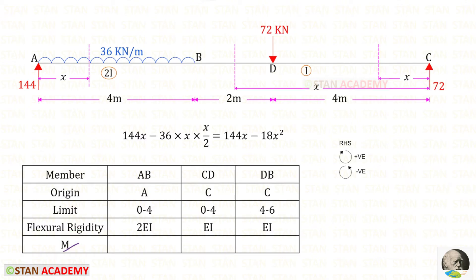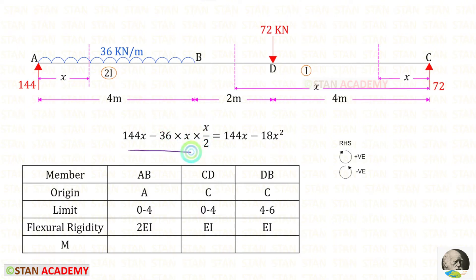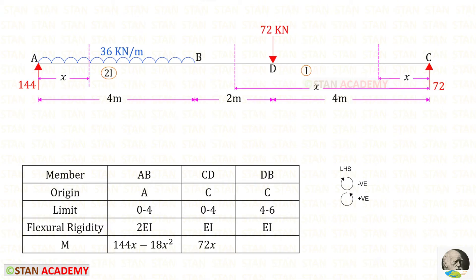Now let us find moment M in section AB, measuring from point A, using the right-hand side rule where clockwise is positive and anticlockwise is negative. Ra acts clockwise with distance x, giving 144x. The UDL acts anticlockwise — we multiply the load by the distance and then the distance by 2. After simplifying, we enter this expression into the table.